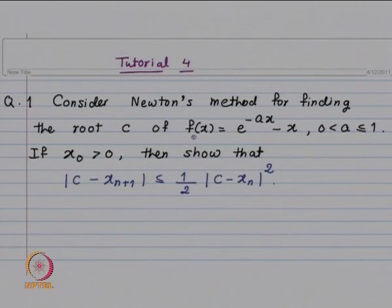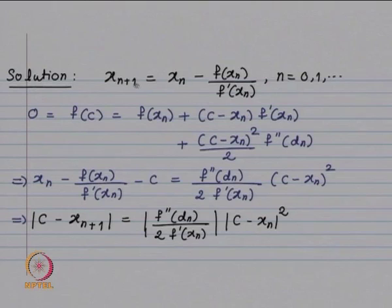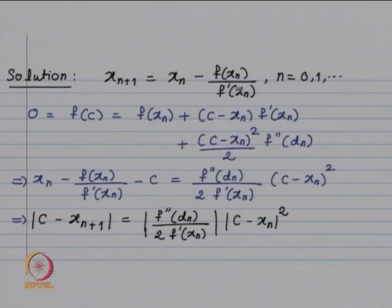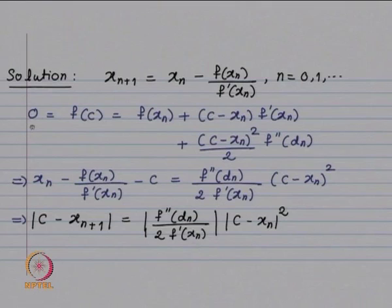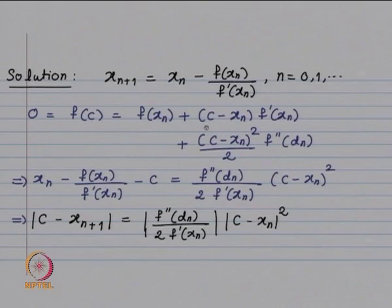The Newton's iterate is by definition x_{n+1} = x_n - f(x_n)/f'(x_n), for n = 0, 1, 2, and so on. To relate the error in the (n+1)th iterate to the nth, we note f(c) = 0 and write the Taylor series expansion: f(c) = f(x_n) + (c - x_n)f'(x_n) + (c - x_n)²/2 · f''(d_n), where d_n lies between c and x_n.